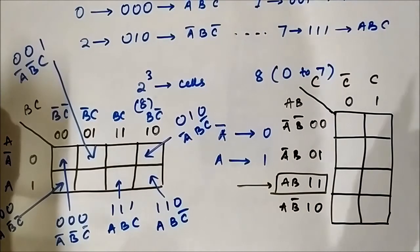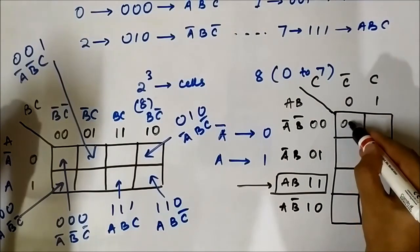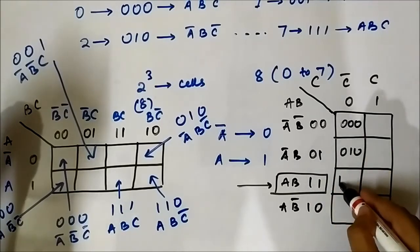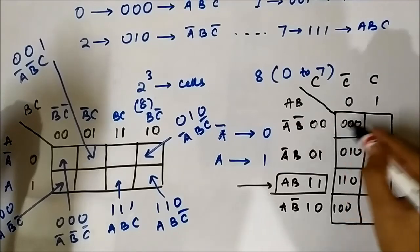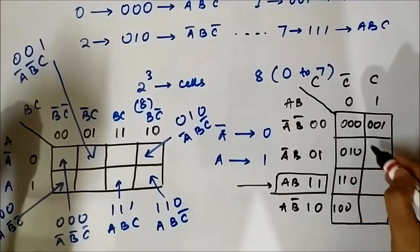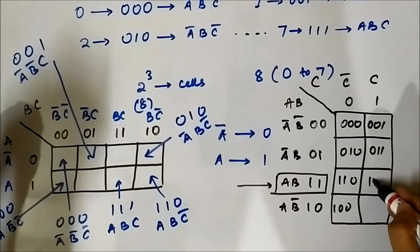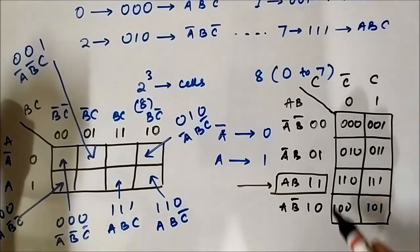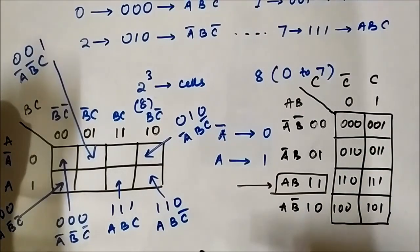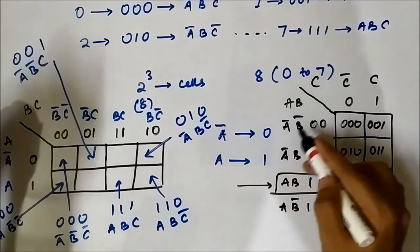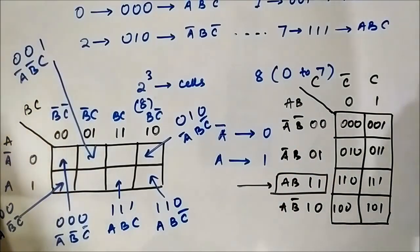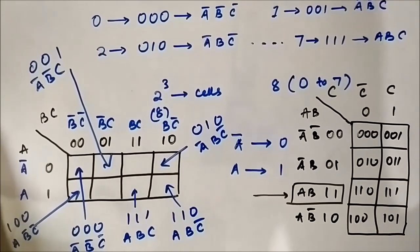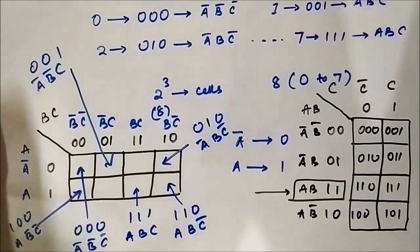So this is the three-variable K-map. The cells correspond to: 0,0,0 — 0,1,0 — 1,1,0 — 1,0,0 — 0,0,1 — 0,1,1 — 1,1,1 — 1,0,1. Each of these cells represents these values corresponding to the Boolean variables. Now we will discuss about the four-variable K-map.